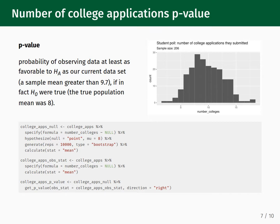We then pipe this into generate. We still use reps equals 10,000, but for the type keyword we use bootstrap instead of permute. Type equals bootstrap means that for each random simulation, we will randomly draw 206 values, with replacement, from the number_colleges column. We do not use type equals permute because we only have one column. Finally, we pipe this into calculate, where we set the keyword stat equal to mean. This tells infer that we want to calculate the mean of each of our simulated samples. Note that stat equals mean is used here instead of diff in means because we only have one column — if you are comparing two columns, then using stat equals mean would not make sense.